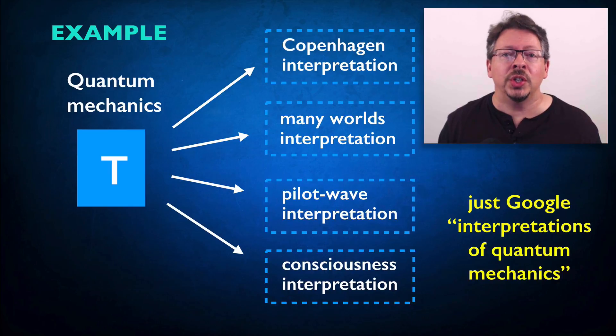But maybe the most egregious example of this problem in science is the long history of debate over the correct interpretation of quantum mechanics. Here you have a situation where the best theory in the world, the most empirically successful theory that human beings have ever come up with has no consensus interpretation.